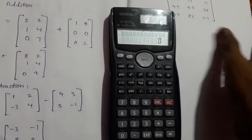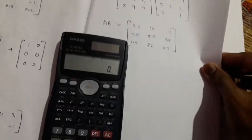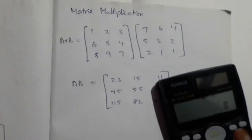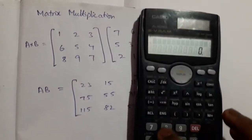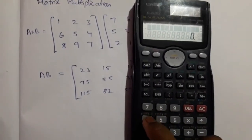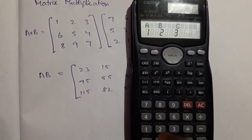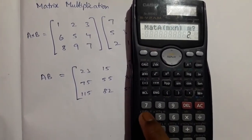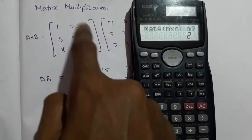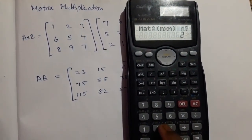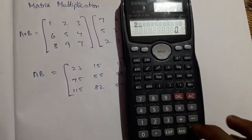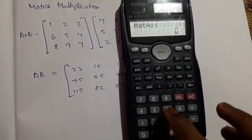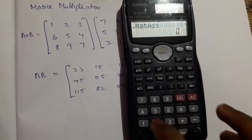Then we go to matrix multiplication — this is easy like addition and subtraction. Press Shift, 4, dimensions, set matrix A with 3 rows and 3 columns. Enter the elements: 1, 2, 3, 6, 5, 4.